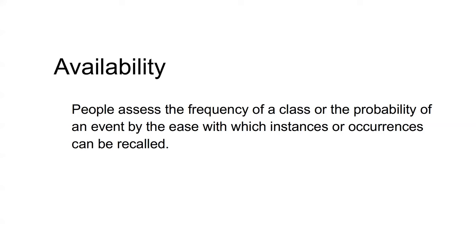Under the availability heuristic, people assess the frequency of a class or the probability of an event by the ease with which they can recall instances or occurrences. If an event is more available, it is judged to have a higher frequency or probability.